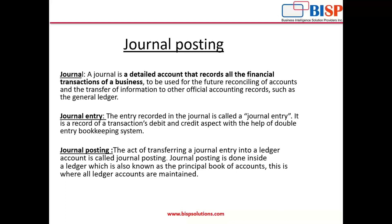A journal entry is the entry which is recorded in the journal. It is a record of transactions with debit and credit aspects using the double entry bookkeeping system. Every journal entry has two effects: one side is a debit and the other is a credit, because every transaction has two effects — one debit and one credit.